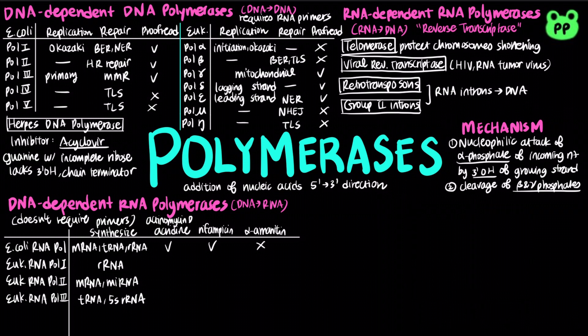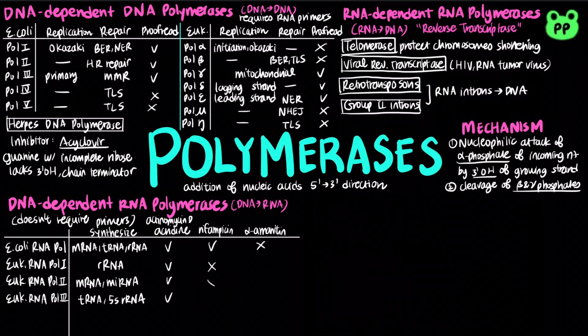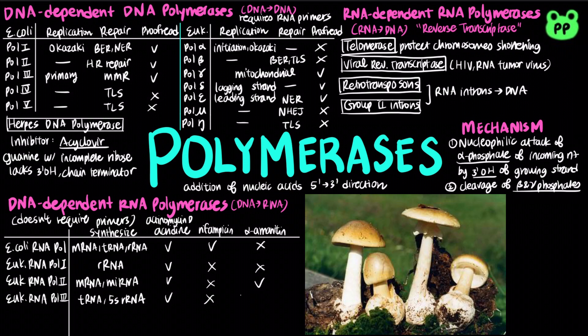All eukaryotic RNA polymerases are also inhibited by actinomycin D and acridine, but not inhibited by rifampicin. Alpha-amanitin derived from mushroom blocks polymerase 2, and at higher concentrations, it also blocks polymerase 3.